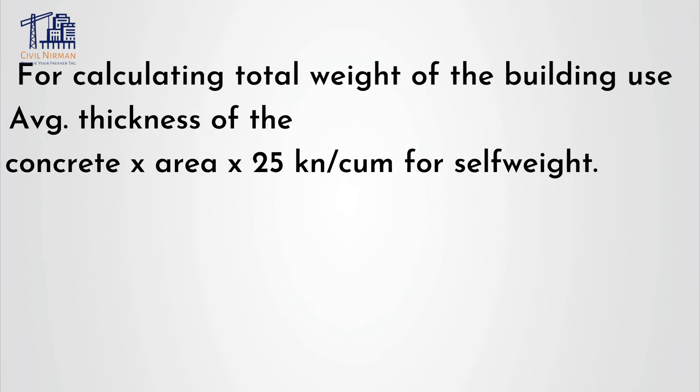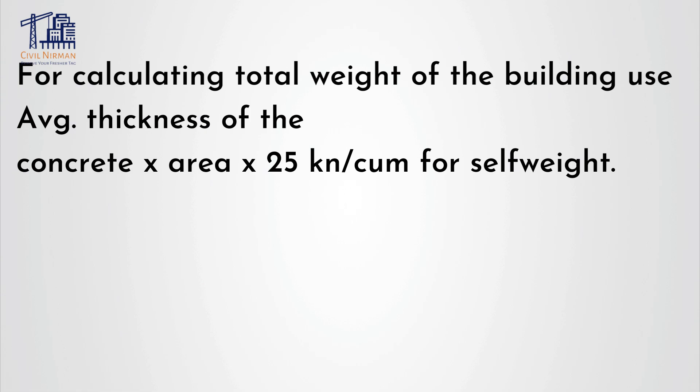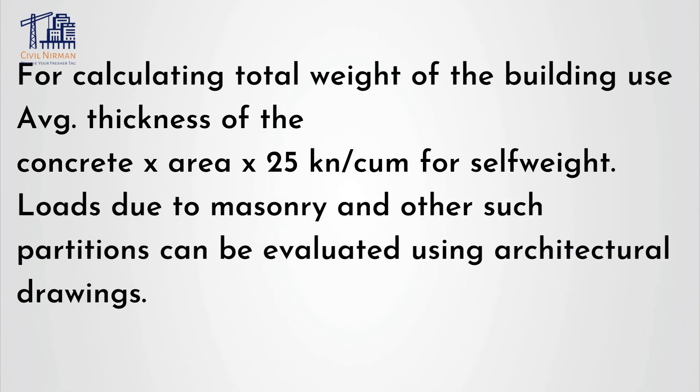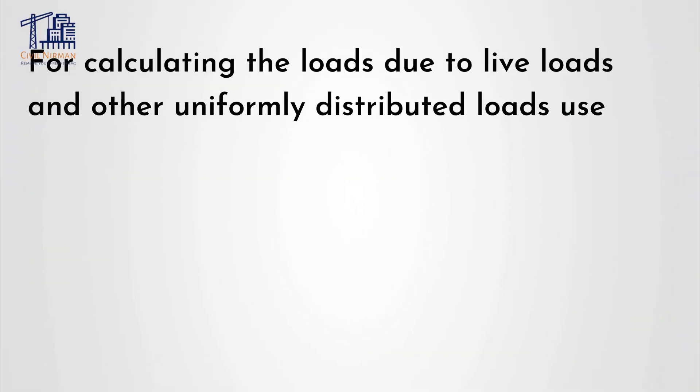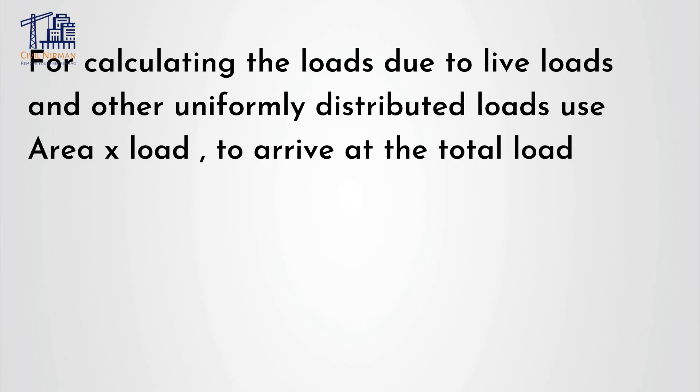The next most important point is load evaluation. The purpose of load evaluation is to come up with the approximate loads on the various members before actually doing the analysis on the computer. This will help in providing a better understanding of the expected loads to the design engineer, and it shall also be helpful for the reviewing engineer to check the work done. You can utilize the area method to calculate the loads on the columns and foundations. For calculating the total weight of the building, you can utilize average thickness of the concrete multiplied by area into the concrete density for the self-weight. Similarly, loads due to machinery and partitions can be evaluated using the architectural drawings. For calculating loads due to live load and other uniformly distributed loads, you can utilize area multiplied by the load to arrive at the total load.